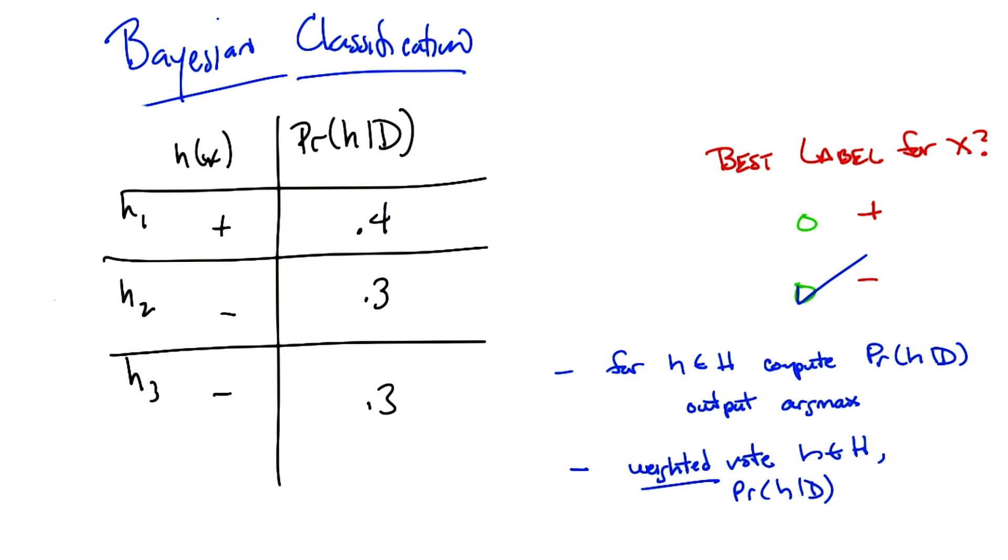And I think that probability laws would tell us that that is equal to the sum of all hypotheses of the hypothesis and the label given the data, which is like the probability of the hypothesis given the data times the probability of the label given the hypothesis, and that's what we did.